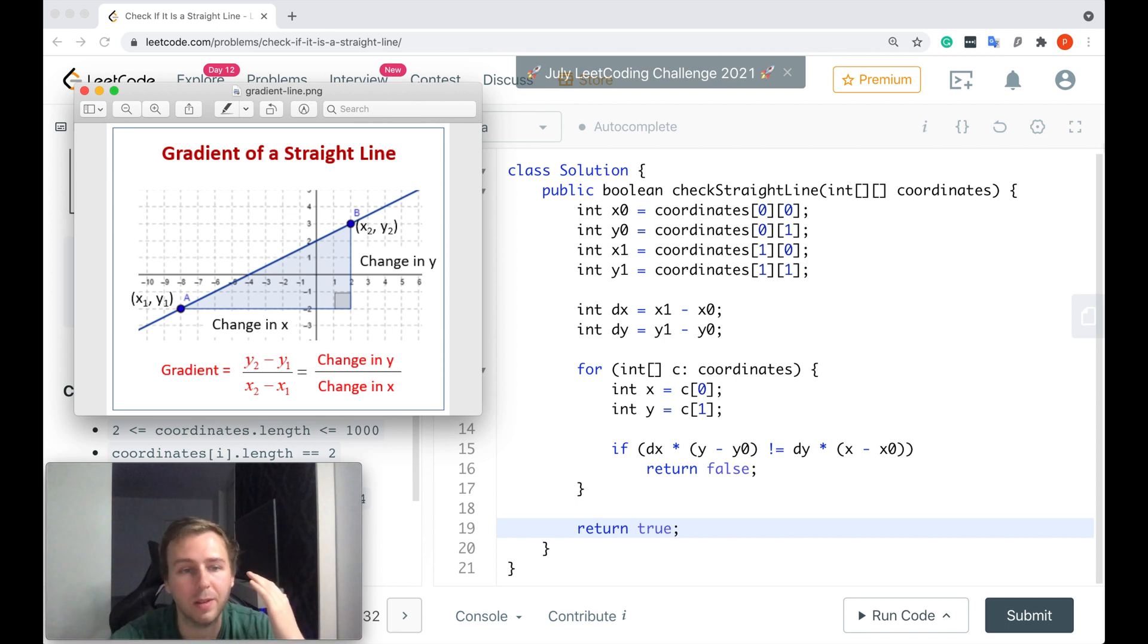Again, we take current x, current y. We multiply the delta x - that's the initial delta x which we calculated here - with the current change in y. So the current y point minus initial y0 for the first point, for the first y value from the coordinates array.